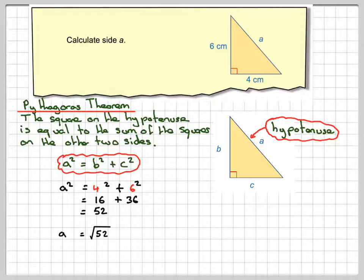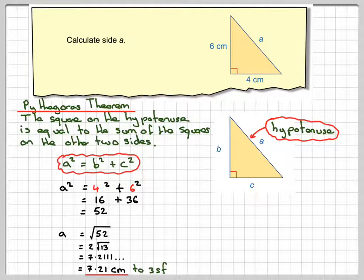Therefore A, that gives me A squared, in order to find the actual length A, I have to do the square root of 52. Now on your calculator, it will give 2 root 13. Then you can press the S to D button and get 7.21111, which will give 7.21 centimetres to three significant figures.